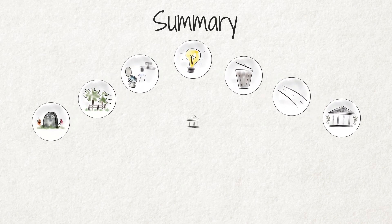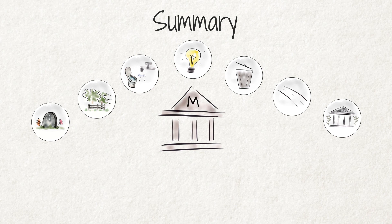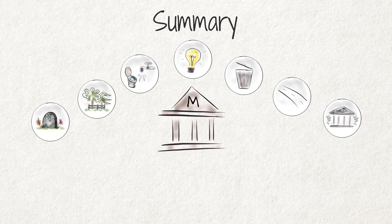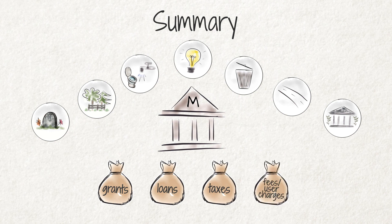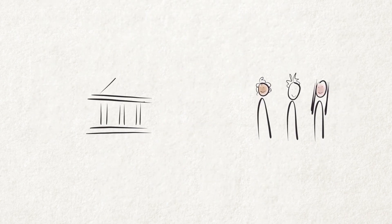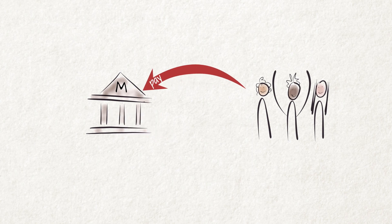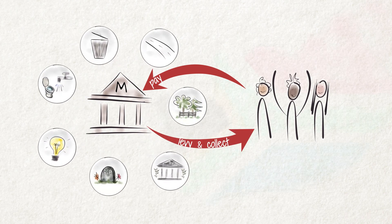In summary, this video explained what basic services municipalities must provide and how they do so. Municipalities provide the services that people use in their day-to-day lives such as water, electricity and refuse removal. In order to provide such services, municipalities need a lot of money, which they get through grants, loans, taxes and the fees charged for the use of services. It is critical that people who do not qualify for free services pay their municipal accounts, so that our municipalities have the resources necessary to deliver and maintain the services to all the people of this country.